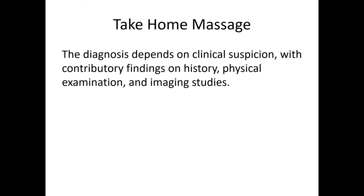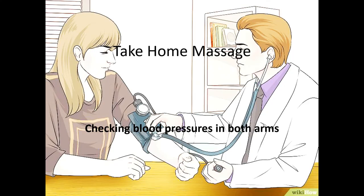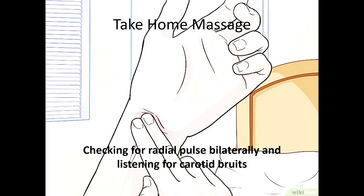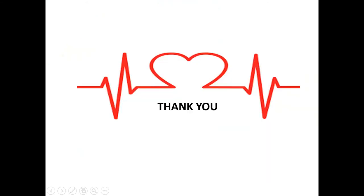The key take-home message: the diagnosis of aortic dissection depends on clinical suspicion. You need to check for dissection prior to administration of thrombolytics in a patient presenting with chest pain and ECG changes. Most importantly, for any patient presenting with chest pain, measure blood pressure in both arms, palpate pulses in both arms, and if the ECG shows no ST-elevation myocardial infarction, do a chest X-ray. Thank you very much.